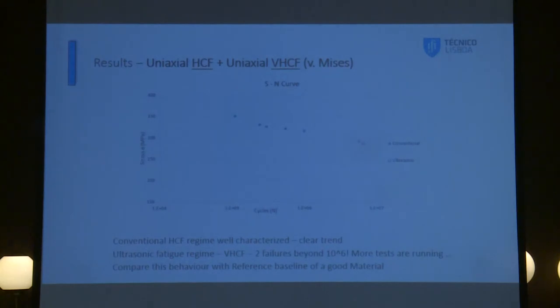Now, regarding the uniaxial HCF and very high cycle fatigue tests in a uniaxial case. This is the results obtained. As you can see here, it is well characterized in terms of the HCF. There's a clear trend. And here, we have performed very high cycle fatigue. We have obtained two results. More tests are running, but we are beyond one million cycles. It is important to perform tests beyond one million cycles. Comparing the last goal will be to compare these results with a good reference baseline material.